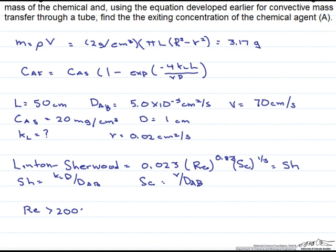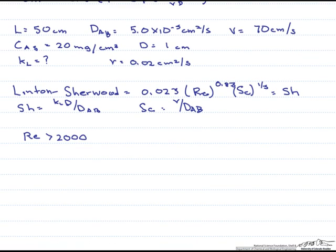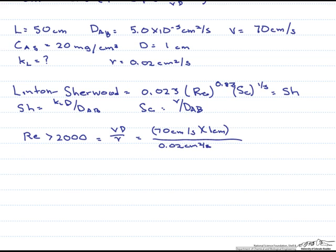So let's calculate the Reynolds number — we are going to need it anyway for our correlation. The Reynolds number is equal to the velocity times the diameter divided by the kinematic viscosity. When we calculate that, we find that the Reynolds number is 3,500. So we can use this correlation.